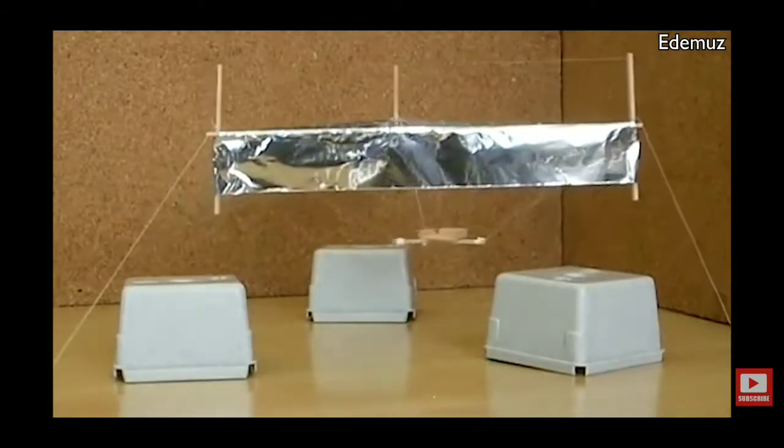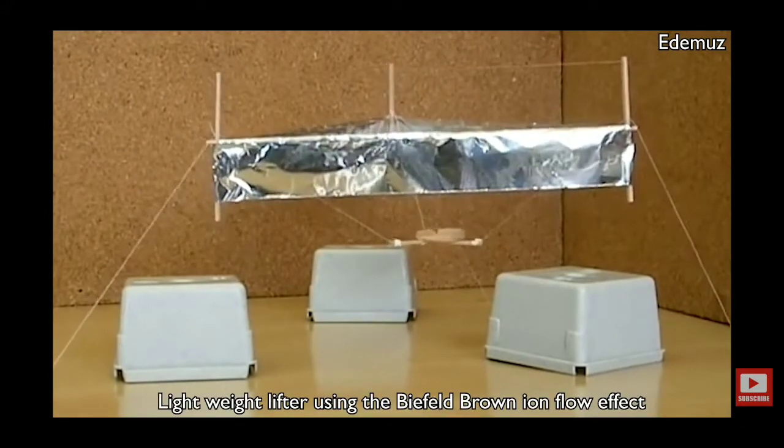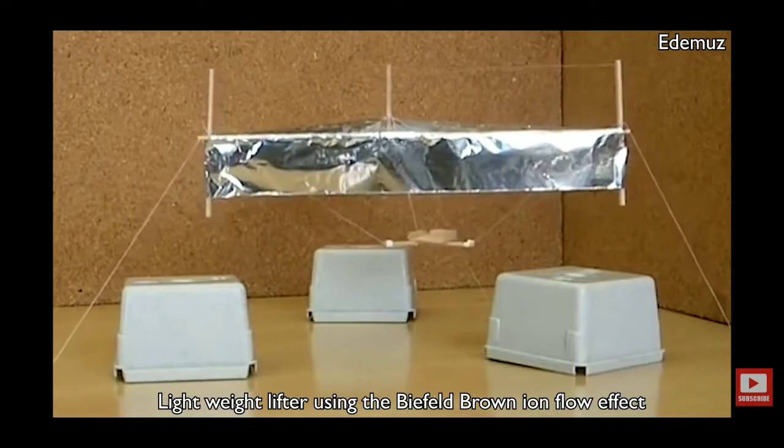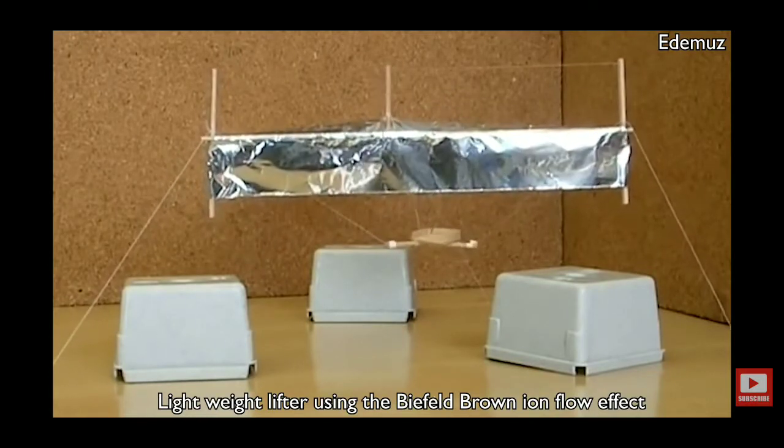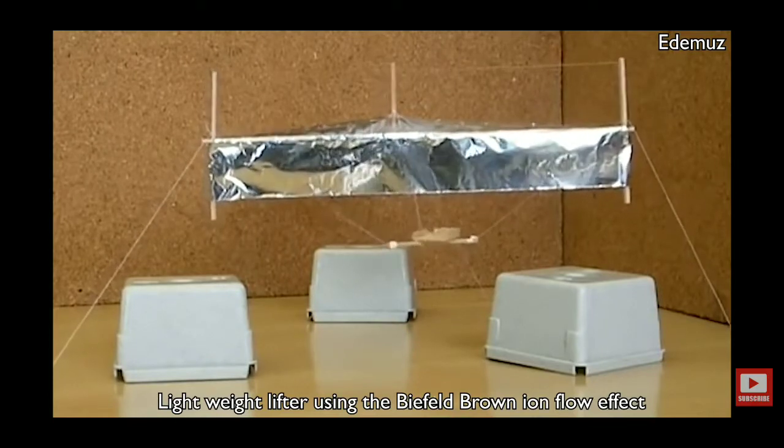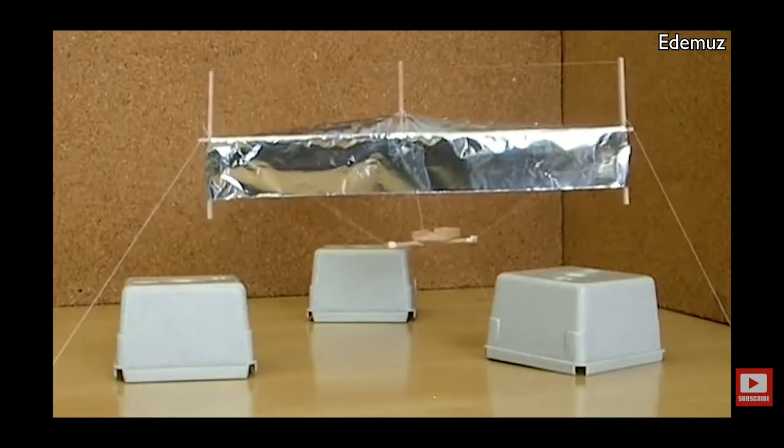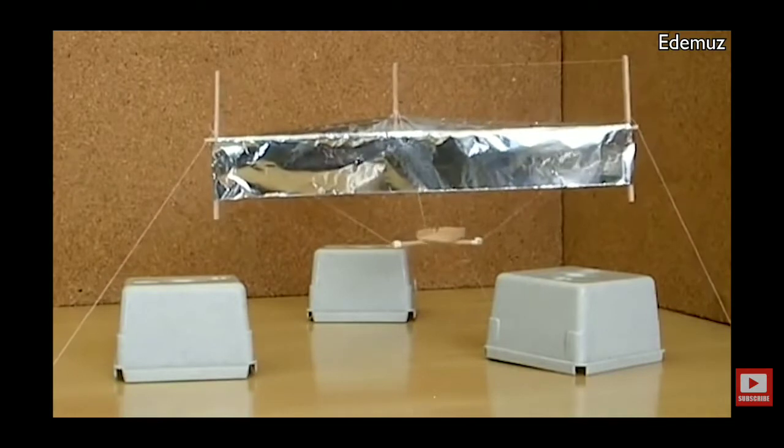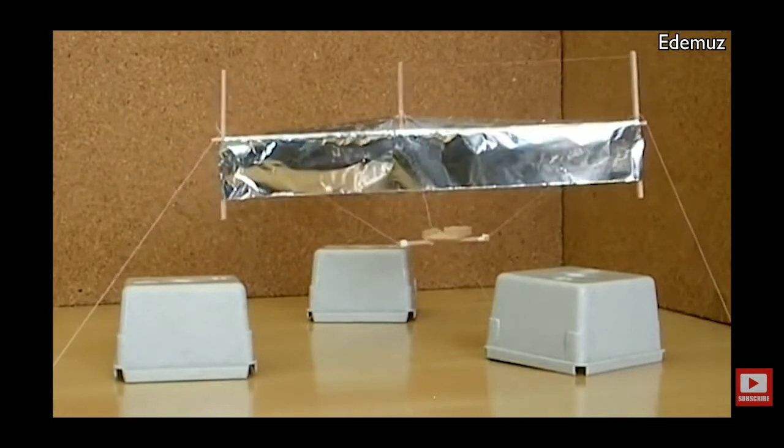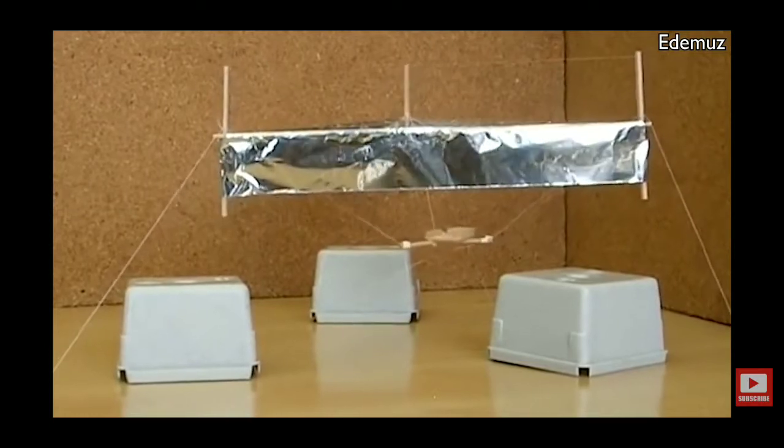Other so-called anti-gravity lifters using the Biefeld-Brown effect are in fact using the propulsive force of ion flow. By charging a very lightweight object or lifter, usually with a high positive voltage, the surrounding air is ionized. As the ions are attracted to the opposite negative electrode, usually on the ground, they interact with the neutral air molecules in between creating an air flow with enough force to levitate the lifter.